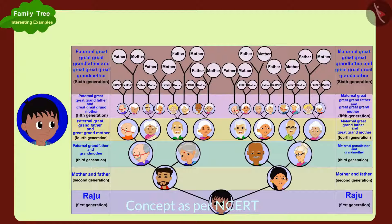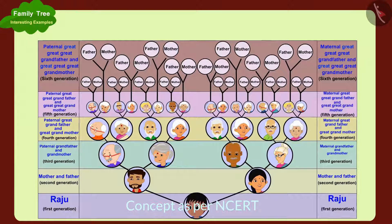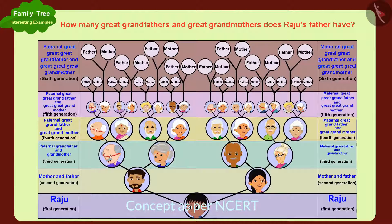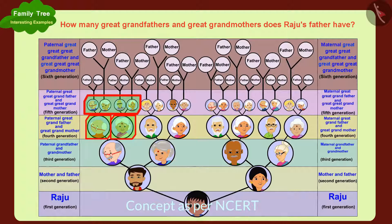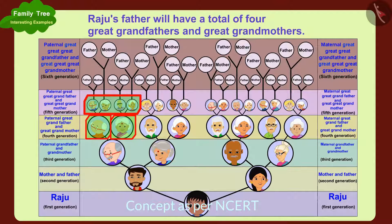Raju asks how many great-grandfathers and great-grandmothers his father has. Raju's father's paternal great-grandfather and great-grandmother are his paternal grandfather's and grandmother's parents. In total, Raju's father has four great-grandfathers and great-grandmothers.